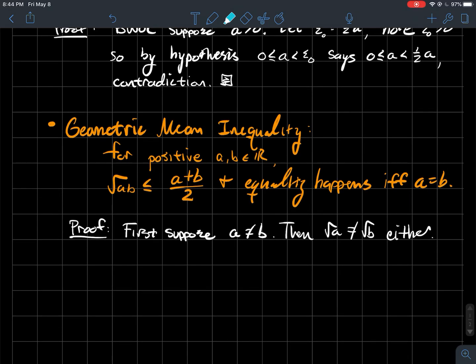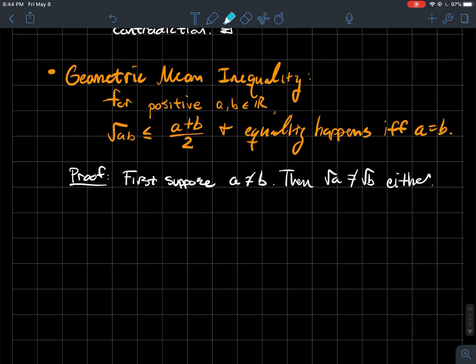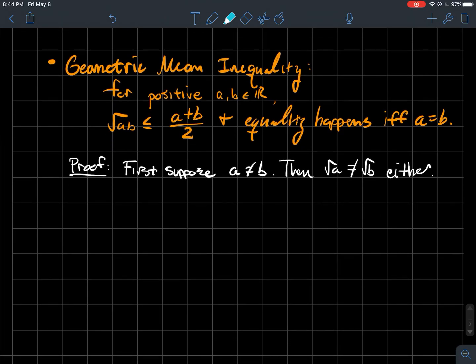So the first thing that we'll do, let's suppose that A and B are distinct. Well, then when you take the square roots, those are distinct as well. I know that if A and B are distinct, well, then I know that their difference is definitely non-zero. And when you square that difference, a number squared is always positive is what this says. So what we'll do is if I'll foil out the left side and that's A minus two times square root of AB plus B is greater than zero.